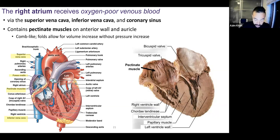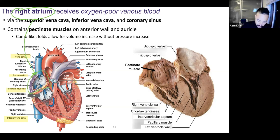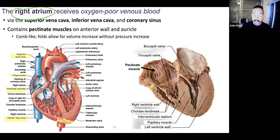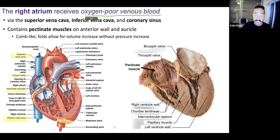Let's start with the right atrium. The right atrium in our illustration is here, and the right atrium in this cadaver heart on the right side would be right here. The right atrium is receiving oxygen-poor blood from veins — three different veins.